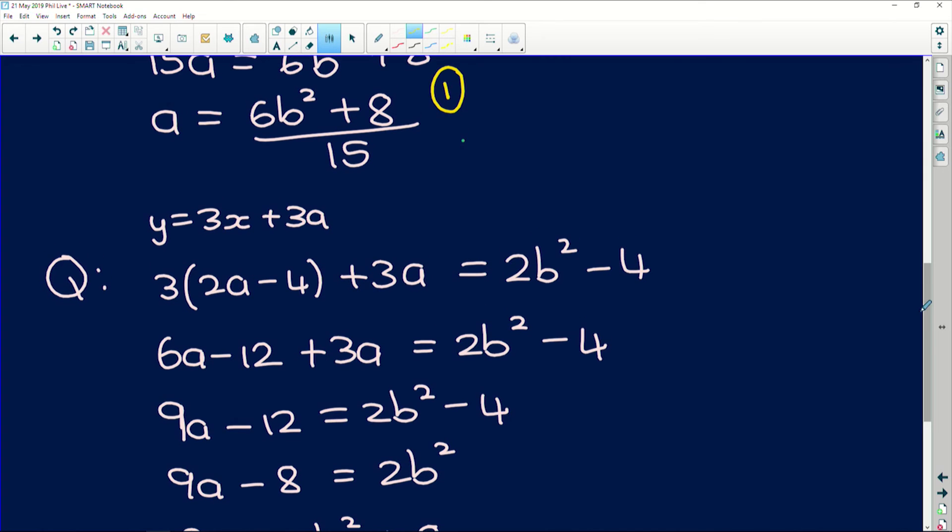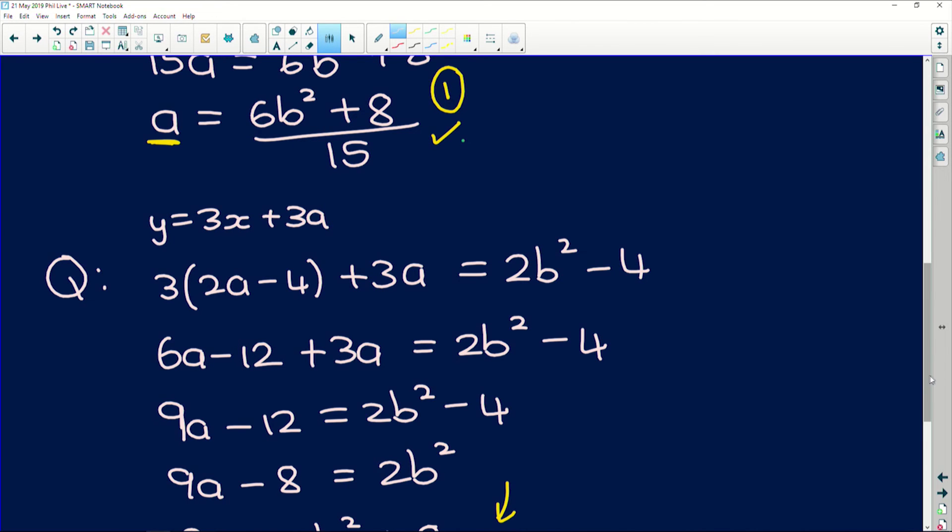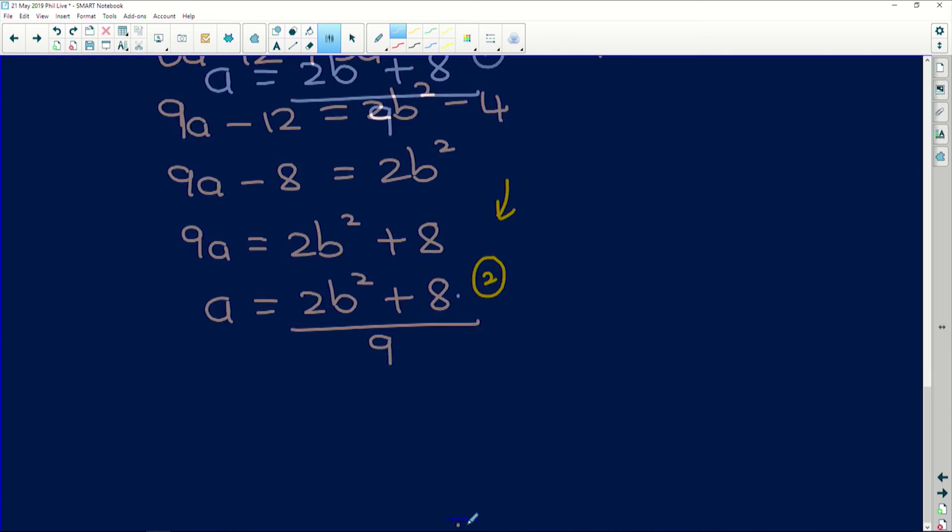Okay. So now we have one equation here, another one down here. Because they're both in terms of a, if I say a is equal to this situation, but a is also equal to that situation, it means that the two situations are equal to each other because they represent the same a value. Remember, that's how simultaneous equations work. So now all we have to do is equate them. So the first one was 6b squared plus 8 over 15. 6b squared plus 8 all over 15, which was our equation 1, is equal to equation 2, which is 2b squared plus 8 all over 9, equation 2.